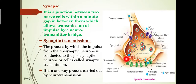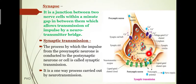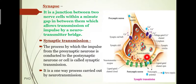This is one neuron, this is another neuron, and that gap is known as the synapse — the junction between two neurons. The process by which impulse from the pre-synaptic neuron is conducted to the post-synaptic neuron is called synaptic transmission. The space within the synapse is known as the synaptic cleft.